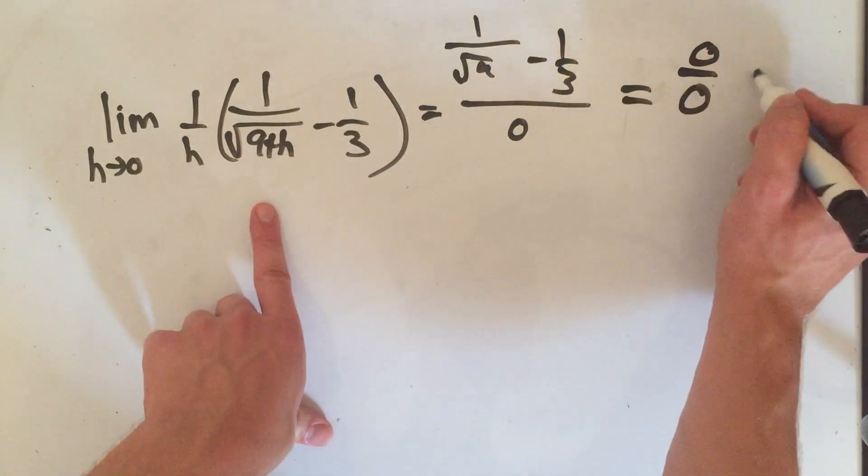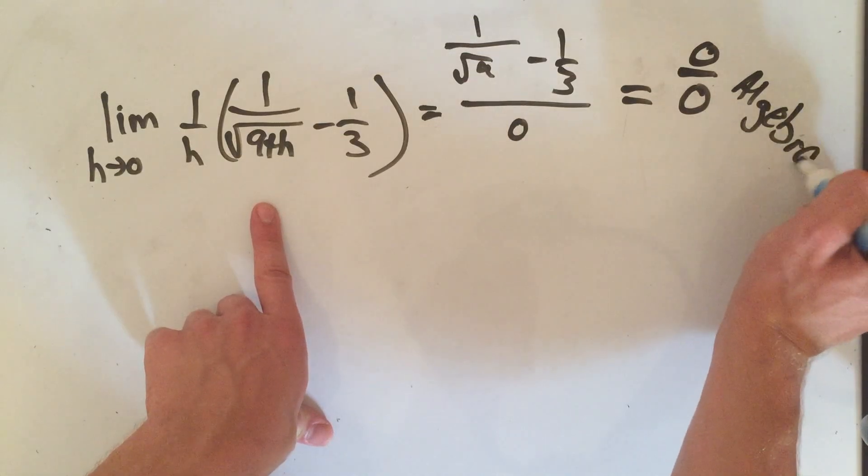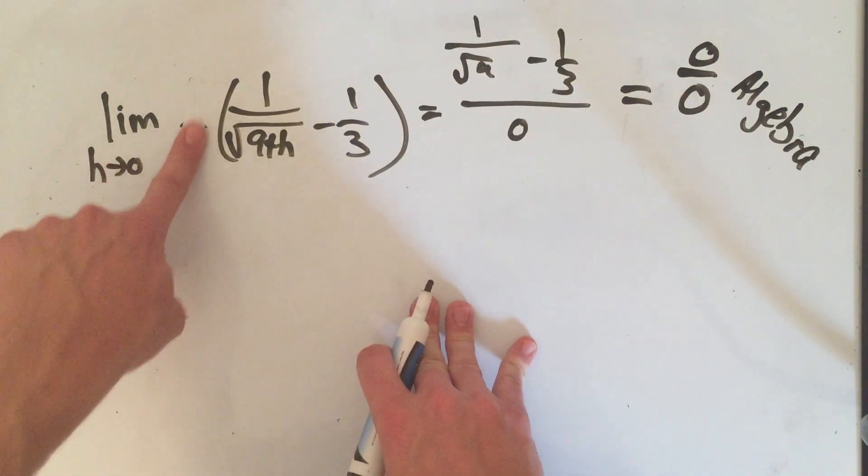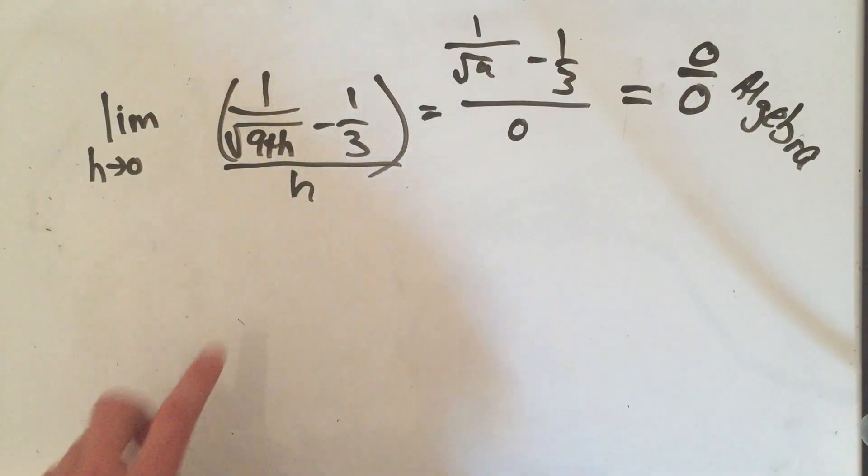You know what that means? We have to do algebra. But this is tricky because, I hope it's alright with you, I'm going to write 1 over h as all over h.